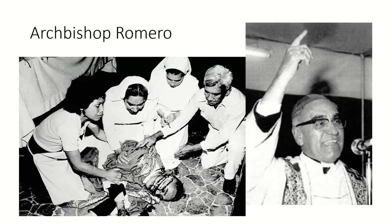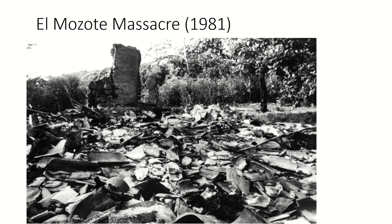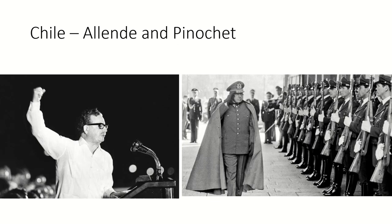The assassination of Archbishop Romero showed just how far these governments were willing to go to stop revolutions or even reforms, and how much the United States was willing to put up with to keep these allies. The El Mozote massacre in 1981 was well known by the American government but ignored because of the fear of communism spreading in El Salvador.